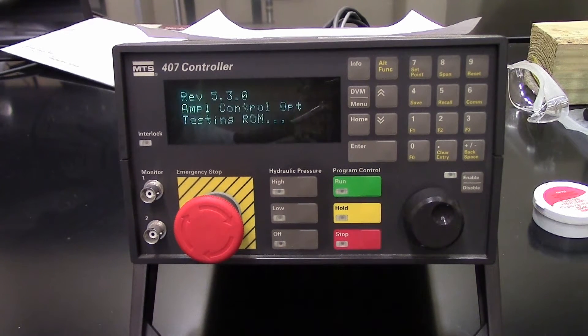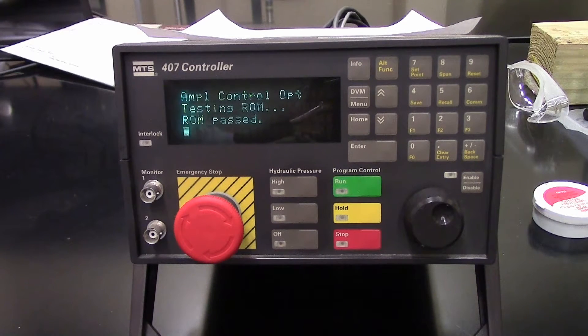The 407 controller came out around 1995, 1996, and it could be purchased up until maybe around 2000, 2005. It's been obsoleted. Parts are no longer available through MTS, but you can still find some of these in labs and on eBay.